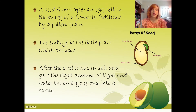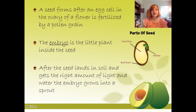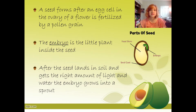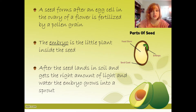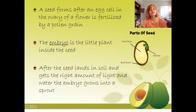After the seed lands in soil and gets the right amount of light and water, the embryo will grow into a sprout — which is what we call germinating. So once the seed germinates, getting the right amount of light and water while in soil, this embryo starts to grow into a sprout, and it is the first part you see pop up out of the soil.